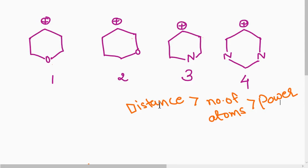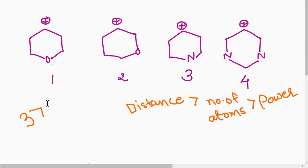The structure with the withdrawing group at a higher distance will be more stable. Here, nitrogen is at a higher distance from the carbocation and oxygen is at a higher distance in these two cases. After checking distance, check the number of atoms — here it is one nitrogen in one case and one oxygen in another. Then check power: the power of oxygen is more than nitrogen, so nitrogen withdraws less, making the nitrogen case more stable than the oxygen case. In another case, the distance is the same but the number of atoms is more, so it withdraws more — meaning the second structure is more stable than the fourth.